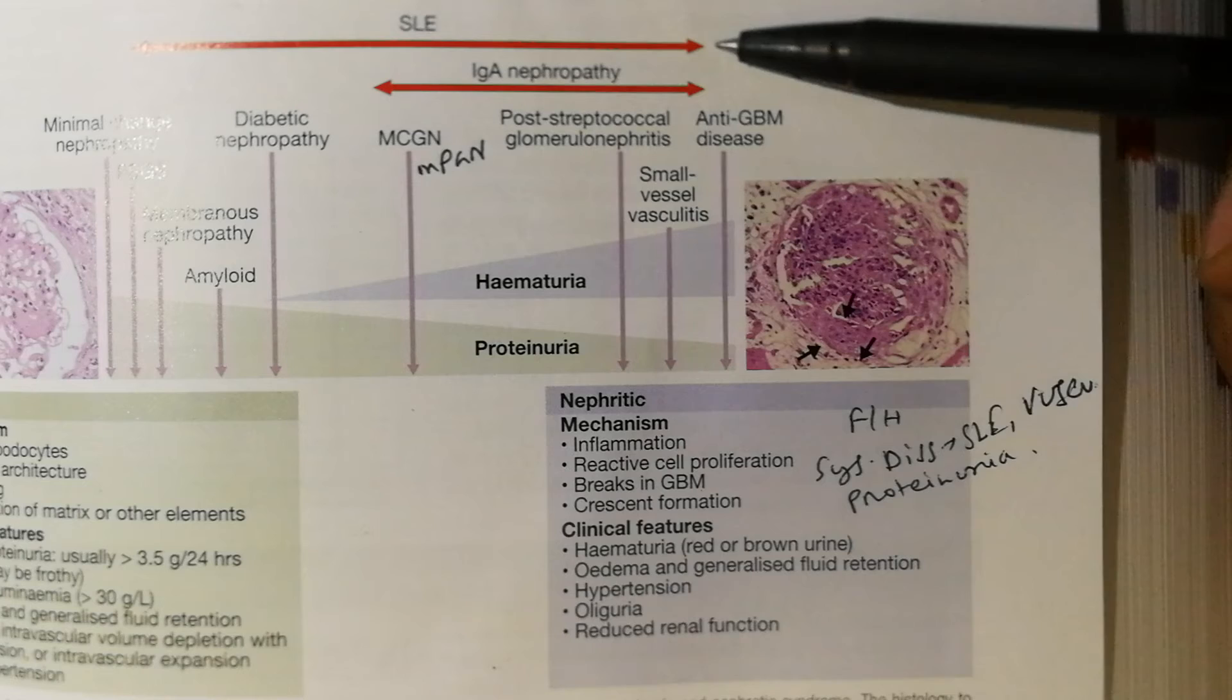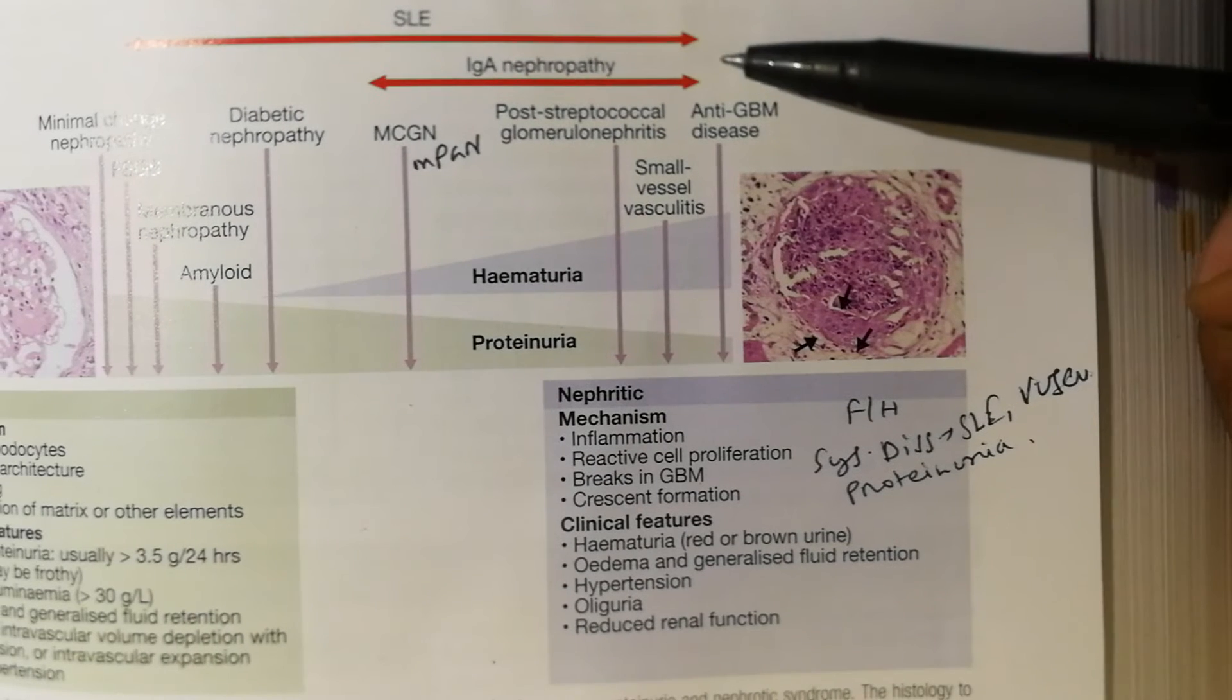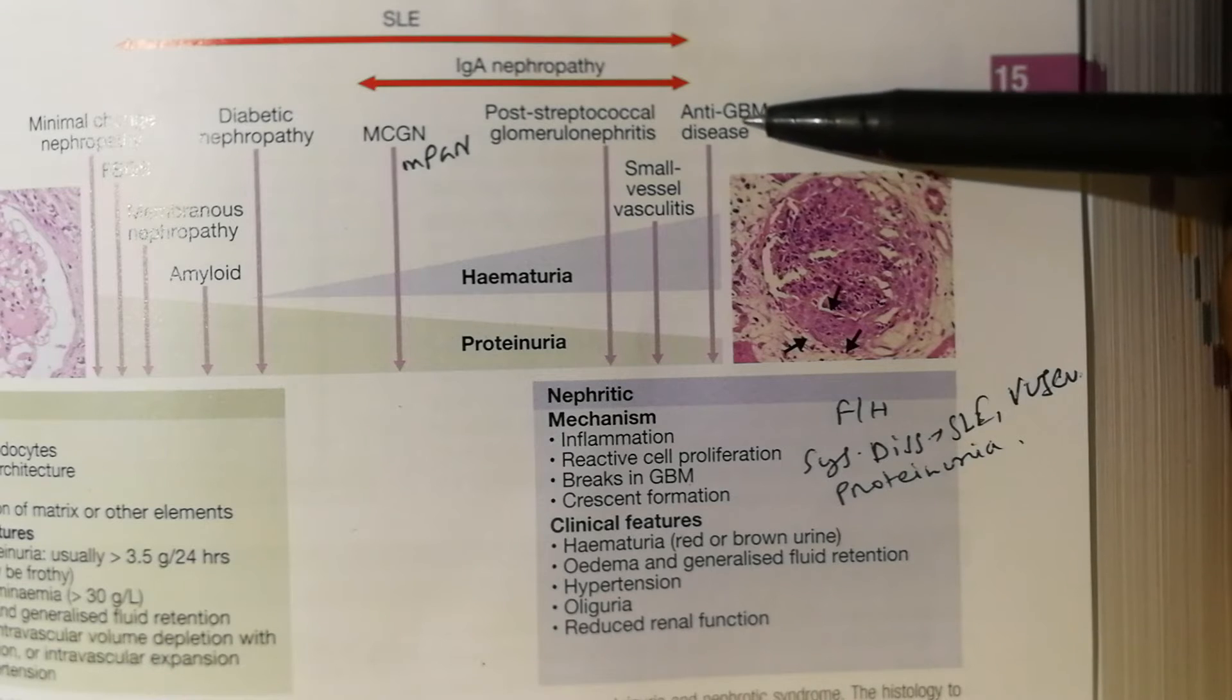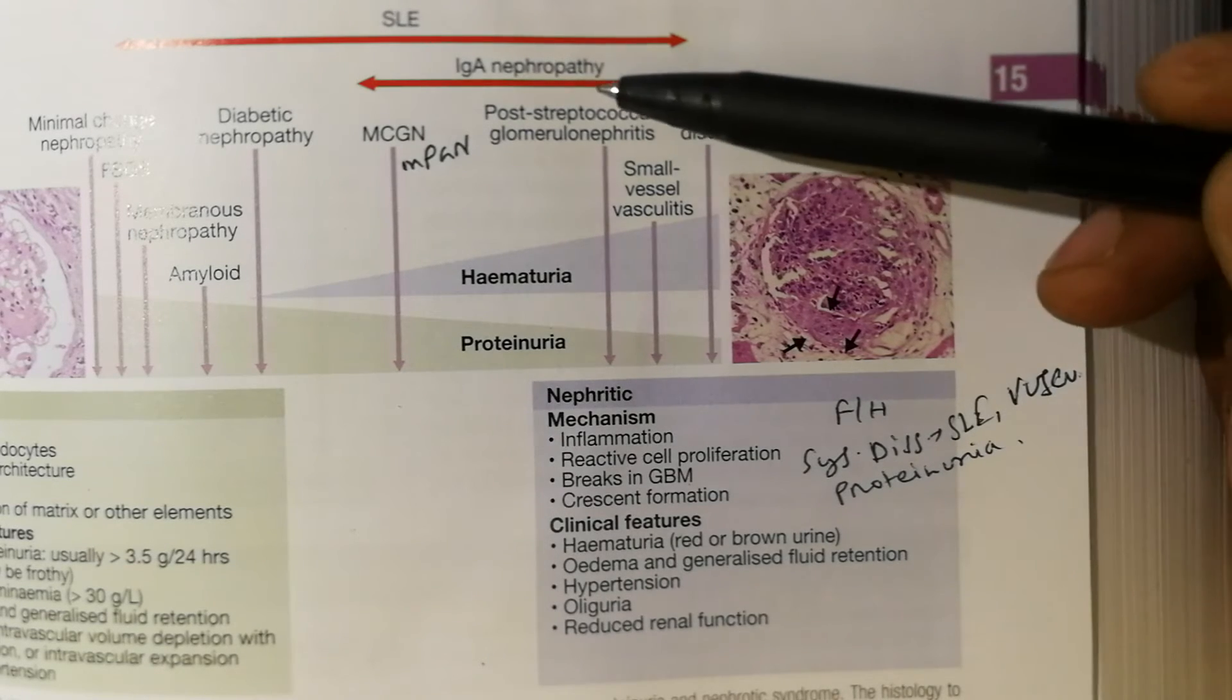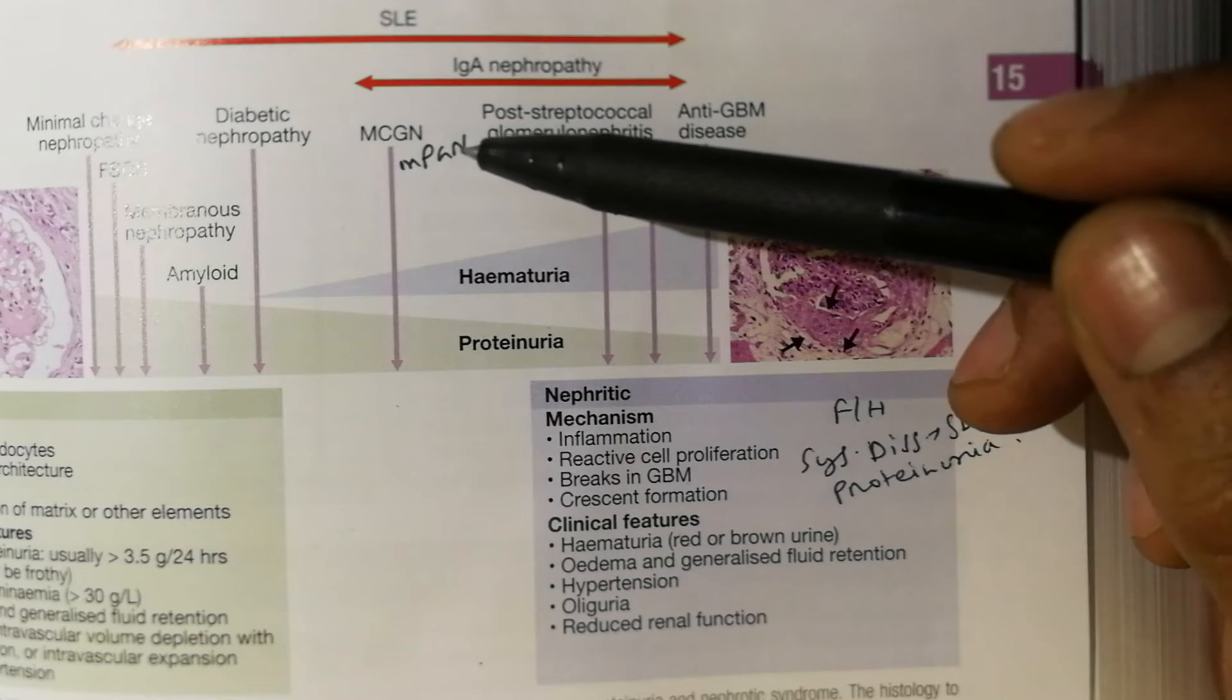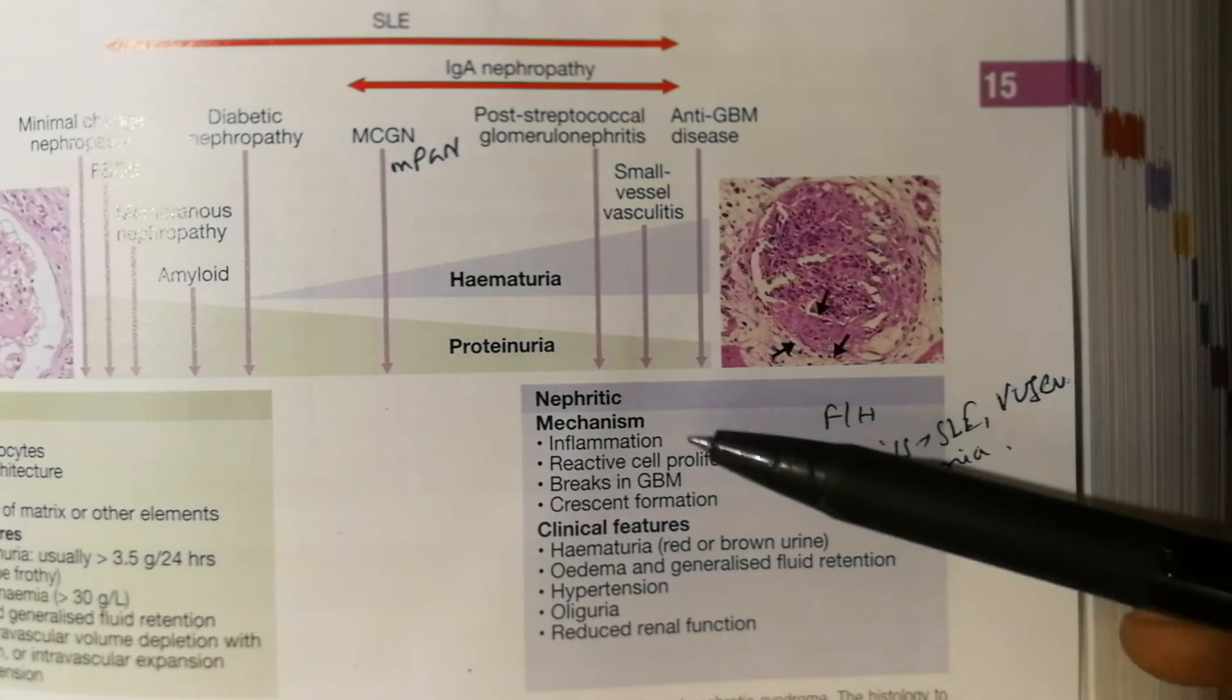Number one is SLE, which causes nephrotic and nephritic combined, but I'm talking first about SLE and IgA nephropathy. Then severe hemorrhage caused by anti-glomerular basement membrane disease, small vessel vasculitis, post-streptococcal glomerulonephritis, and mesangiocapillary or membranoproliferative glomerulonephritis. These are nephritic syndrome.